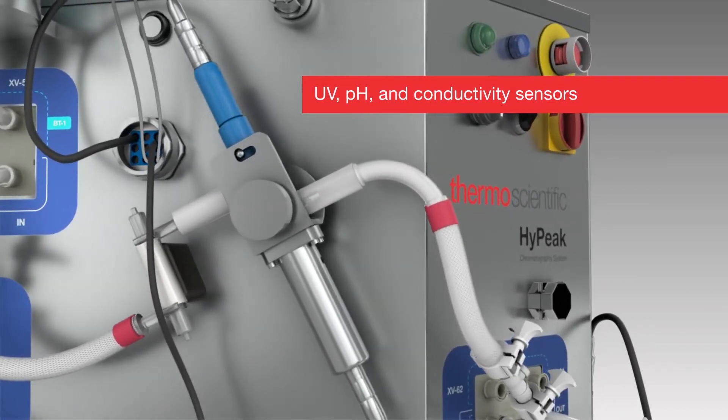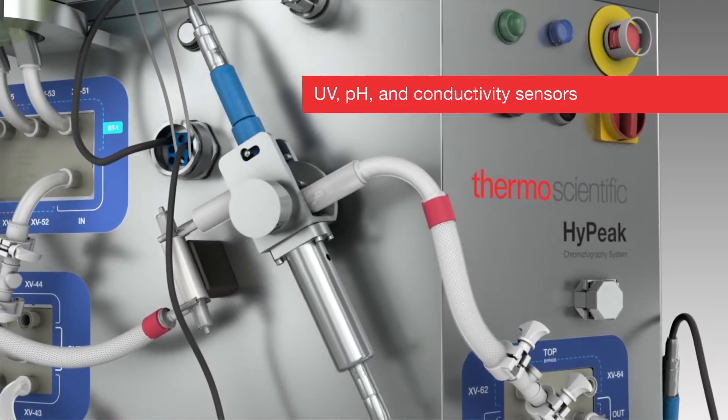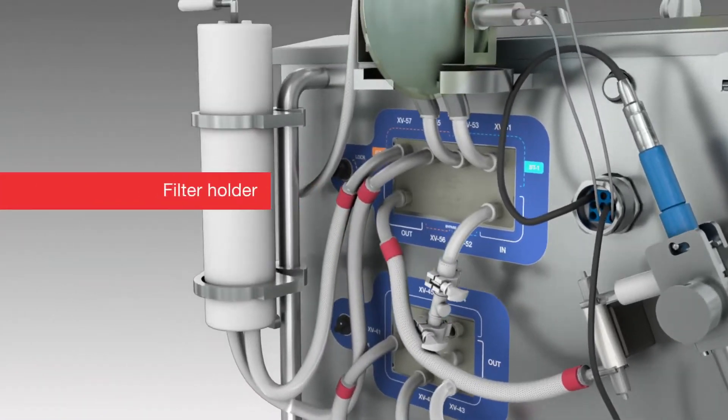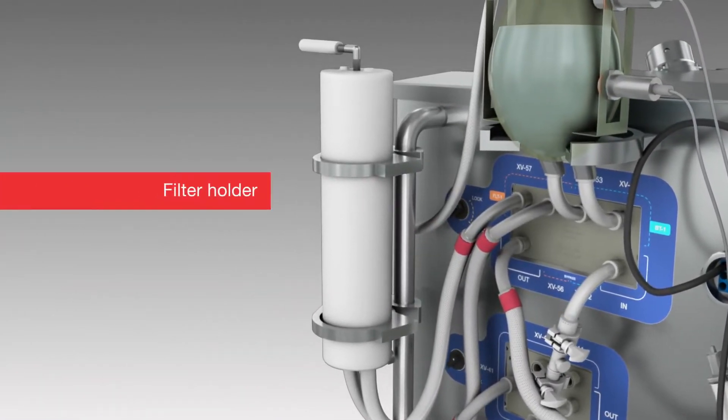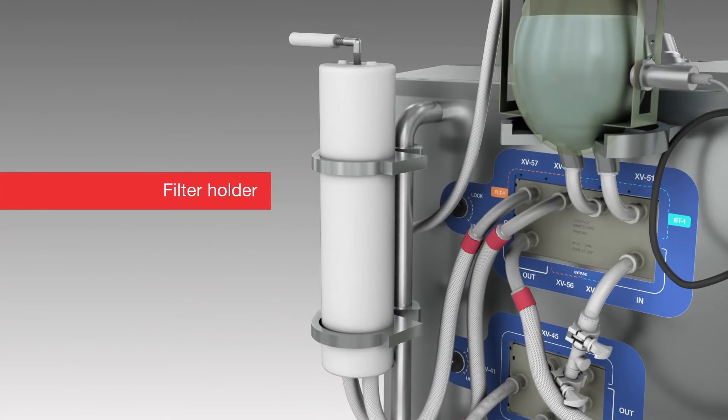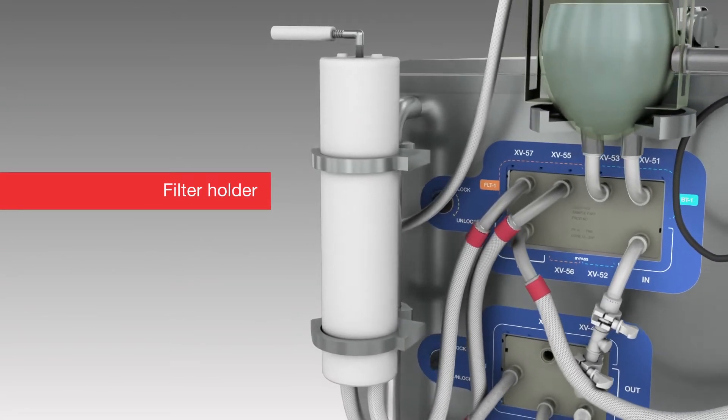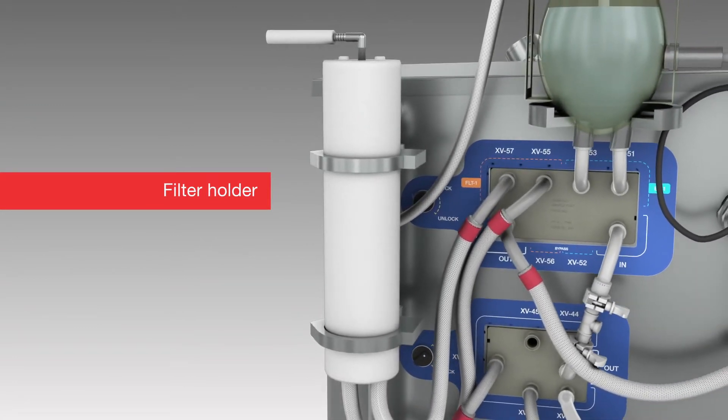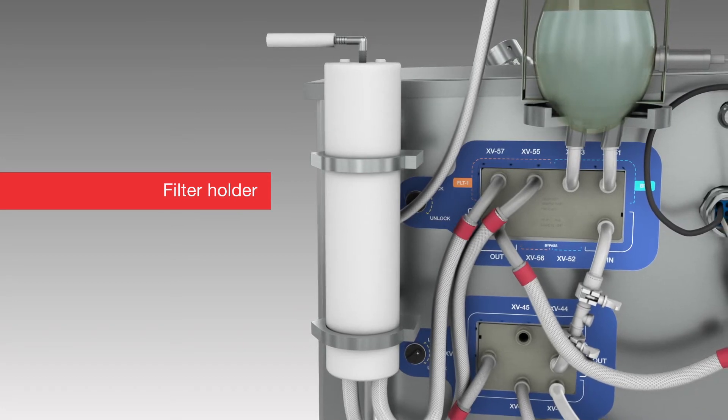UV detection is offered in multiple wavelength options to suit the process needs. A filter holder at the column inlet is provided as standard, and an optional contamination-free single-use filter assembly is available to install and use to avoid particle blockage of the column.